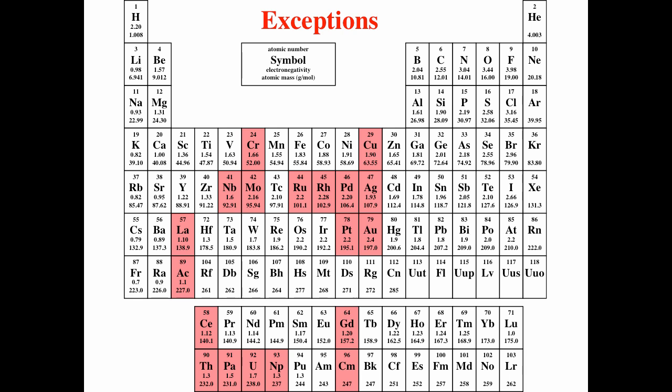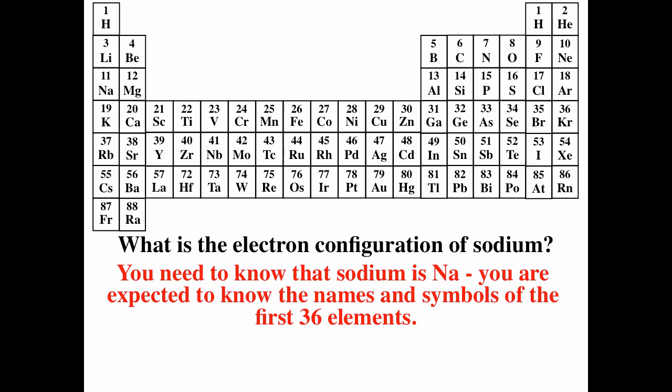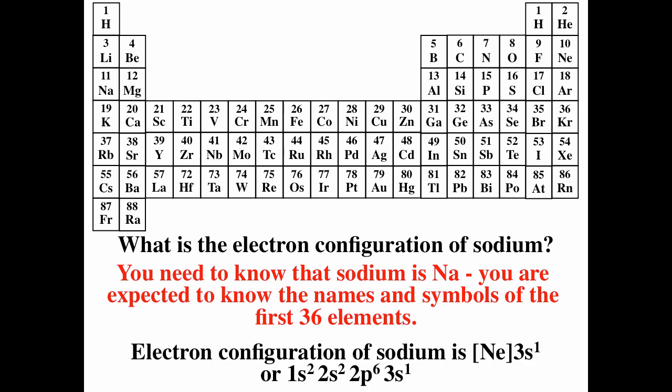A question you could see: what is the electron configuration for sodium? You are always given a periodic table, but there are no names — so you need to know that sodium is Na. You need to memorize the names and symbols for the first 36 elements. Knowing that sodium is Na, we do the order of filling: 1s2, 2s2, 2p6, 3s1. We can also simplify it using the noble gas notation — neon is the last noble gas before sodium, so we write [Ne] 3s1. These are completely equivalent.